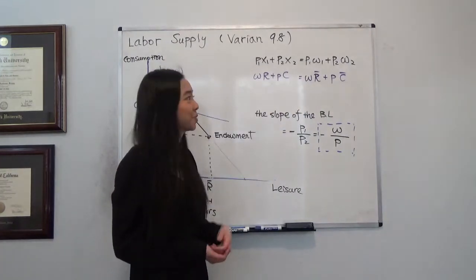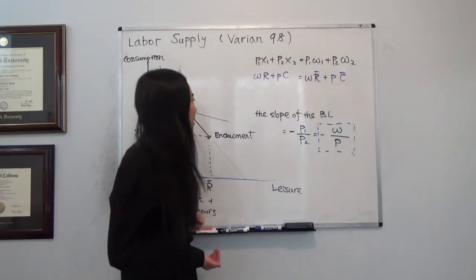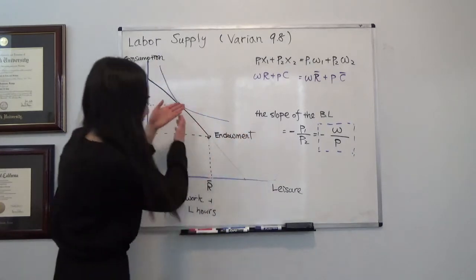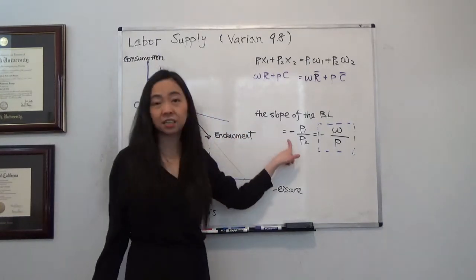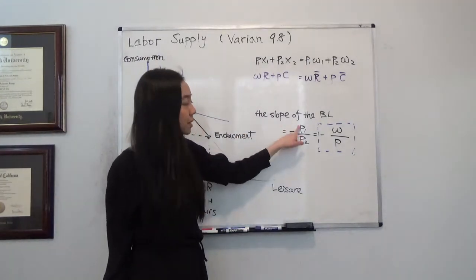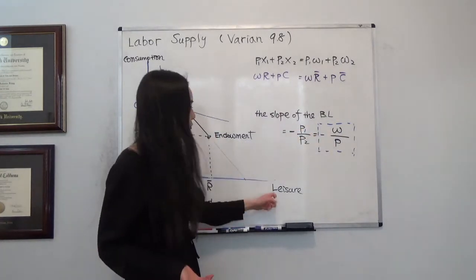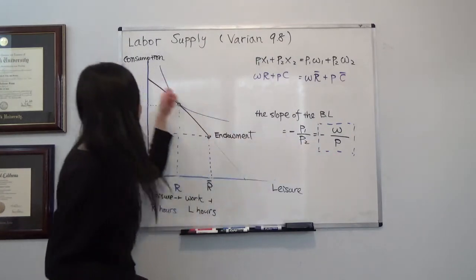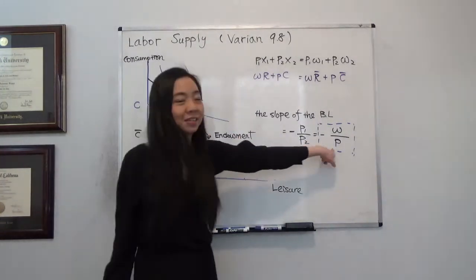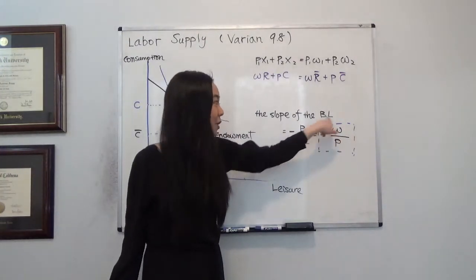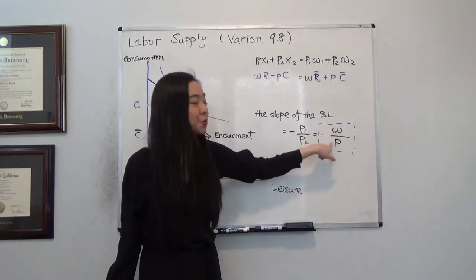And the price of cheese is p. So we know that the slope of the budget line here is equal to negative p₁ over p₂. Now what is p₁? That is just my wage rate. That is the price of leisure. And p₂ is just the price of cheese here, so it's just p. So that's the budget line slope, negative w over p.